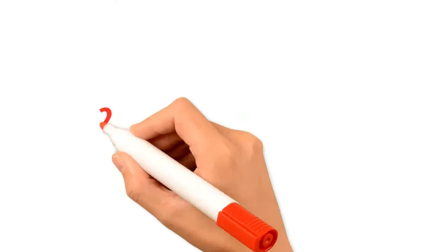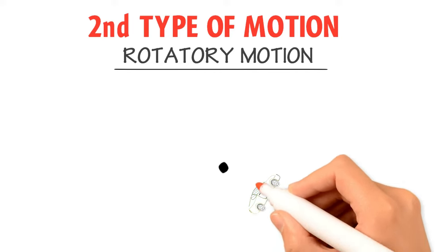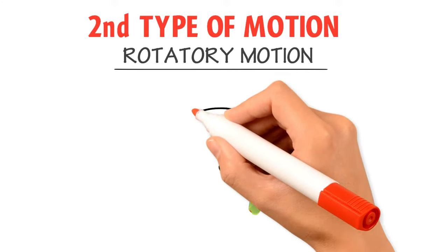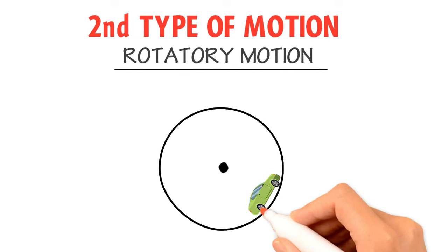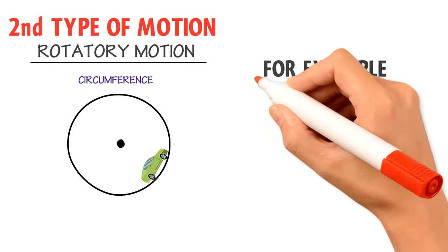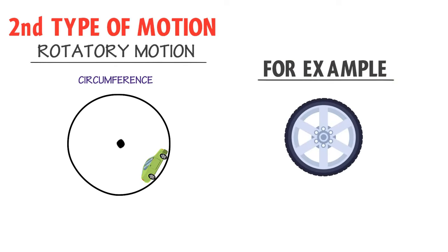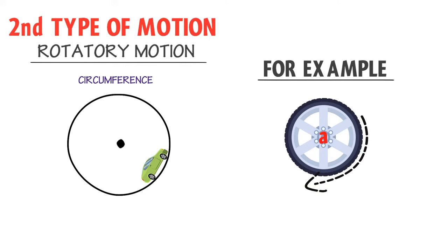Now let me teach you the second type of motion, which is rotatory motion. When each and every point or particle of the body moves around a fixed point or fixed axis, it is called rotatory motion. Simply remember that when a body moves on the circumference of a circle, it performs rotatory motion. For example, the motion of a wheel — the fixed point is the axle, and all the particles of the wheel rotate around that fixed point.